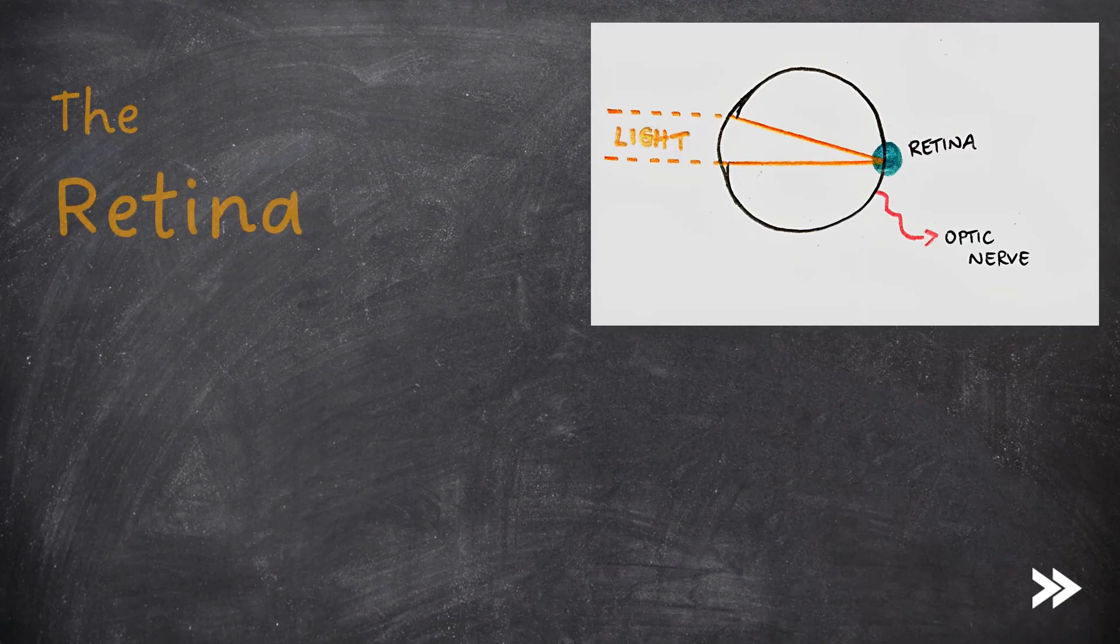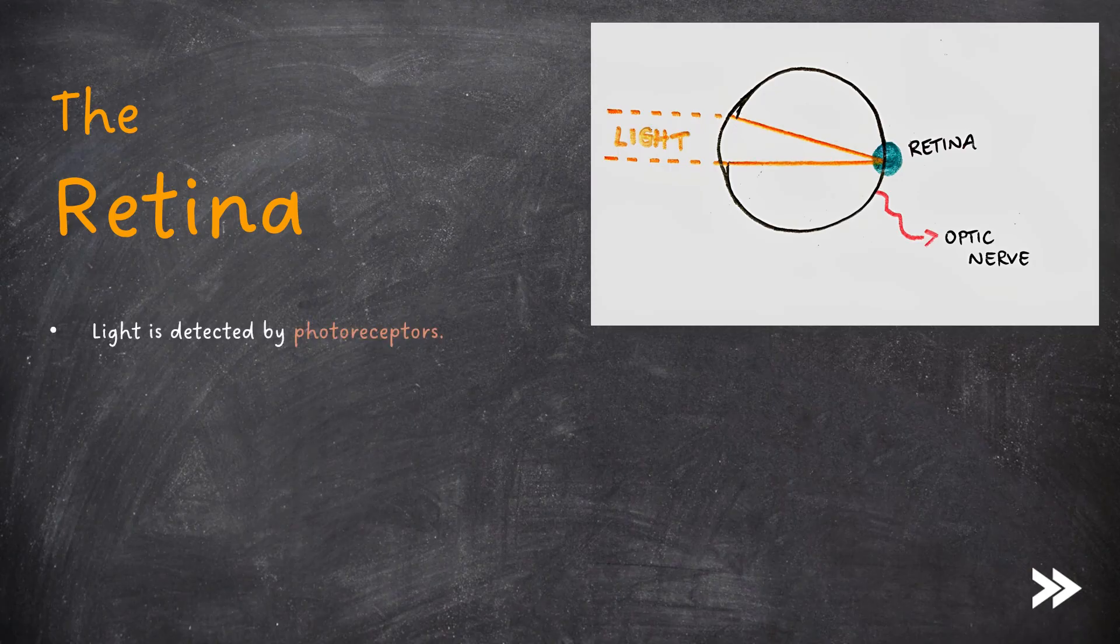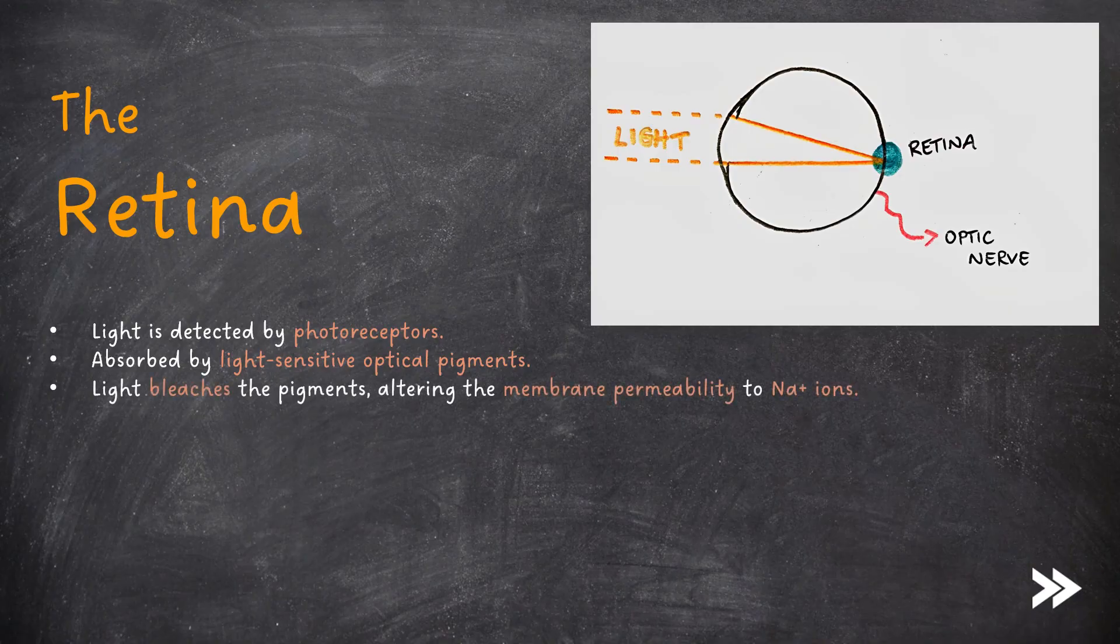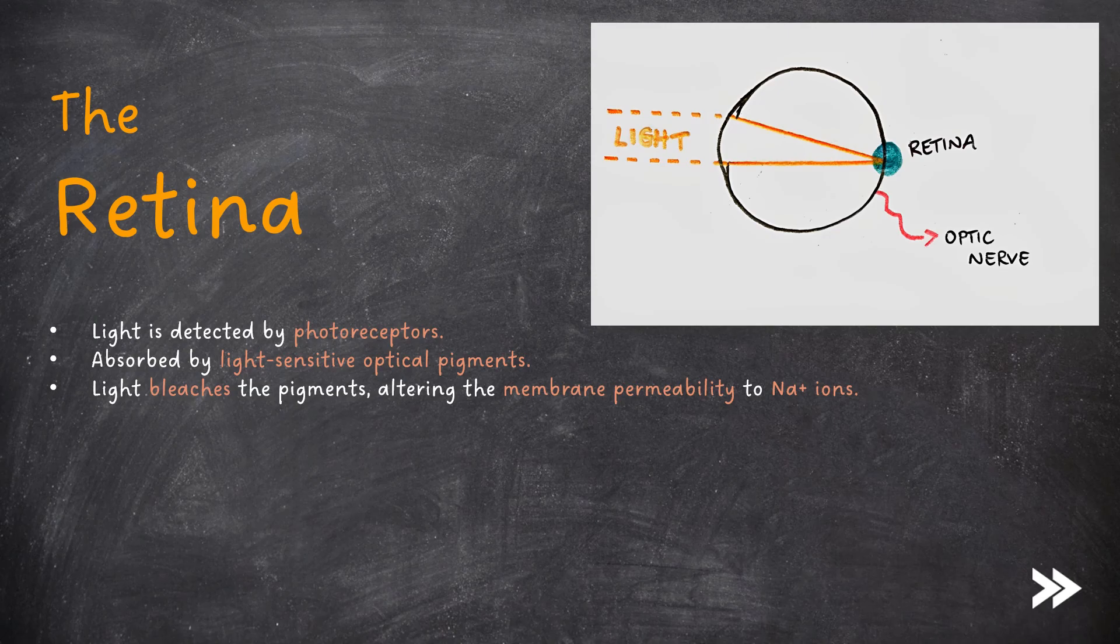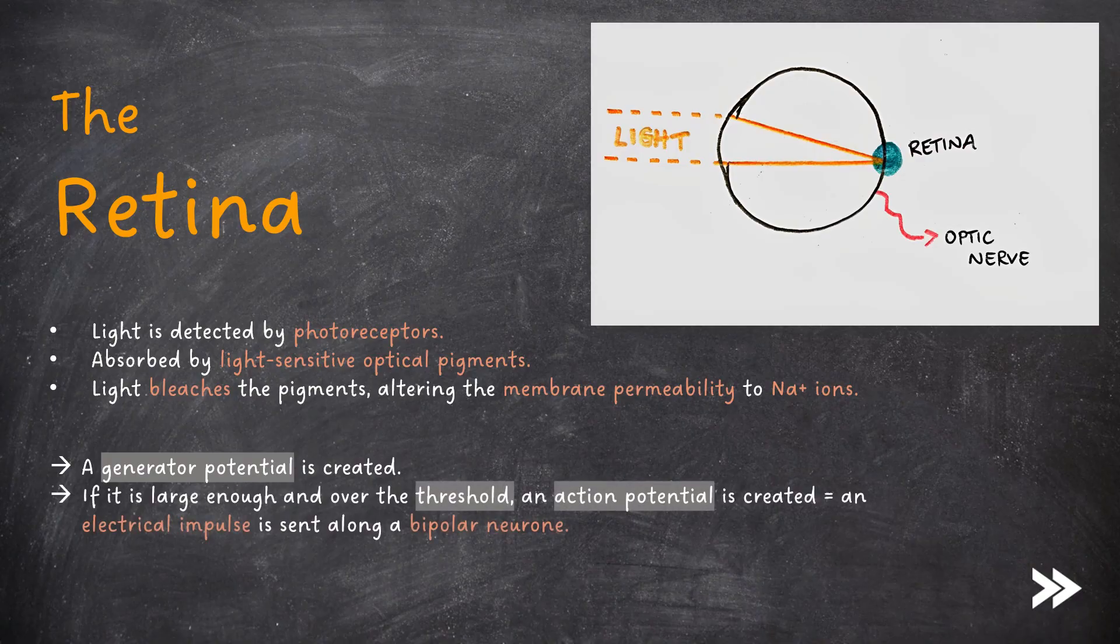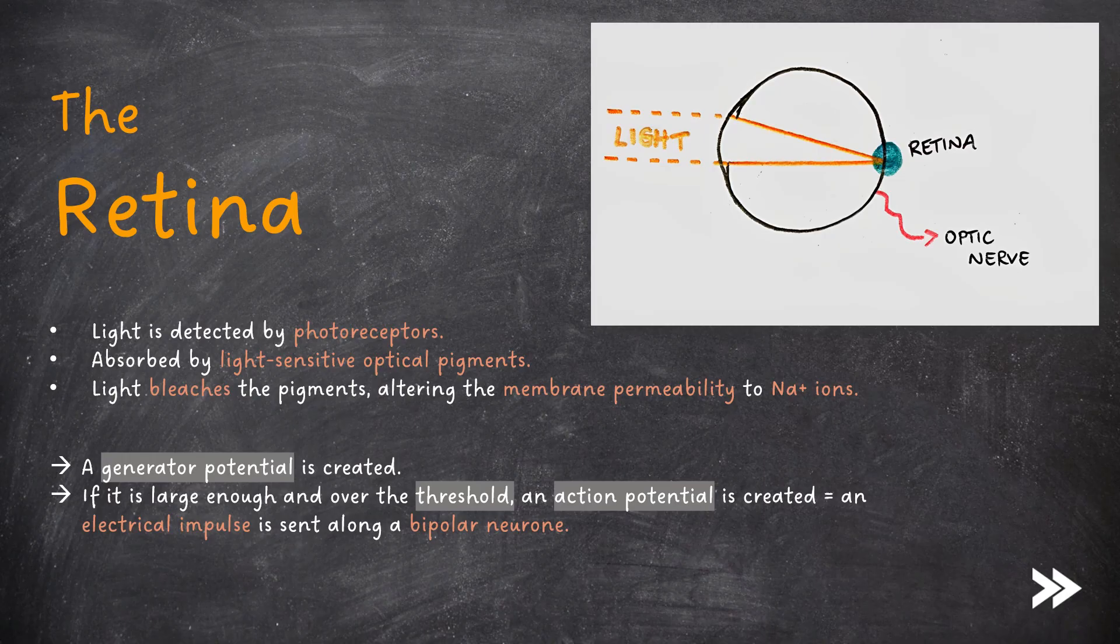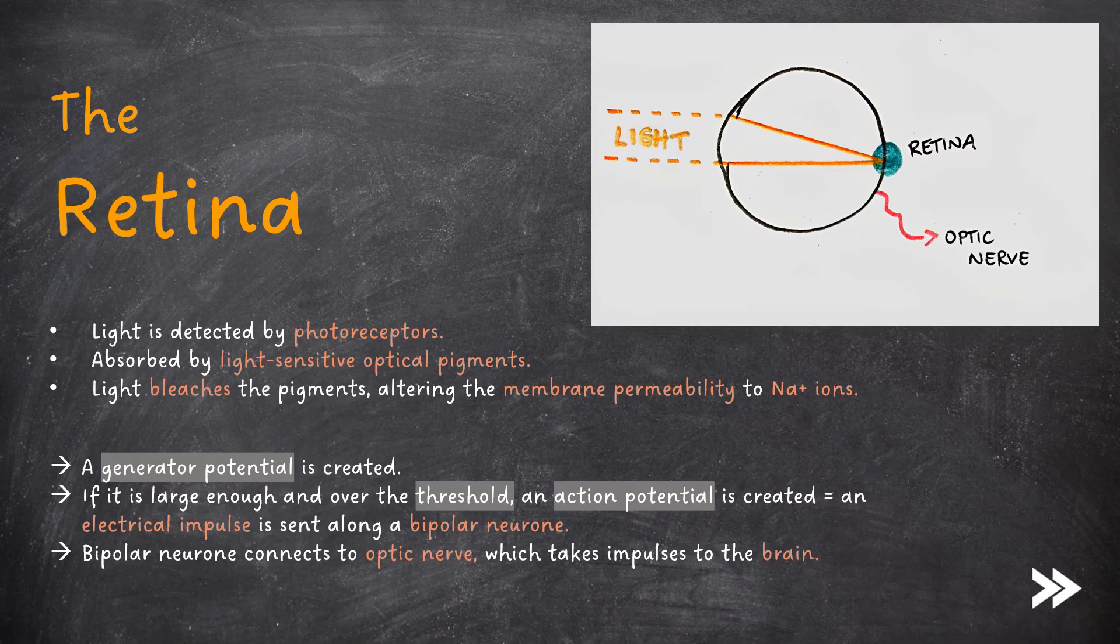Next, the specification wants us to know about the retina. Light is detected by photoreceptors. This is absorbed by light-sensitive optical pigments. Light bleaches these pigments, altering the membrane permeability to sodium ions. A generator potential is created, which, if large enough and over the threshold, leads to an action potential being triggered, i.e., an electrical impulse is sent along a bipolar neuron. The bipolar neuron connects to the optic nerve, which then takes the impulse to the brain.